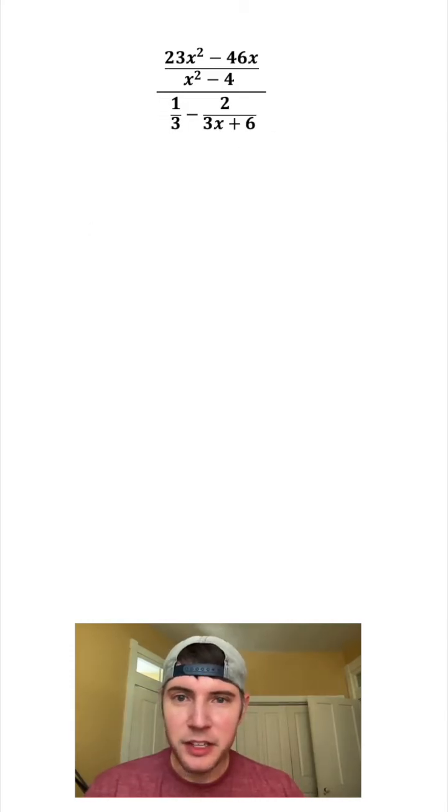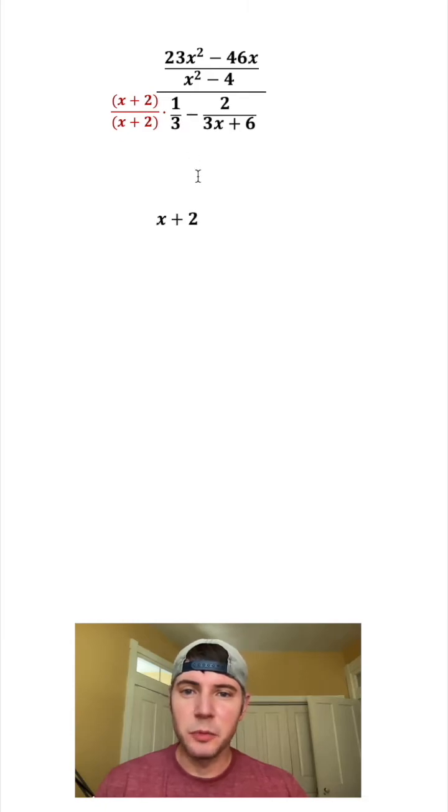So if I multiply top and bottom of this by x plus 2, I'll have a common denominator. So x plus 2 times 1 is x plus 2, x plus 2 times 3 is 3x plus 6, and then we can copy everything else down.